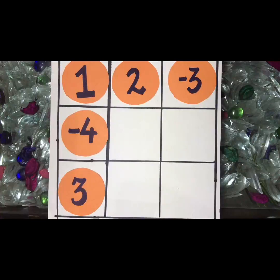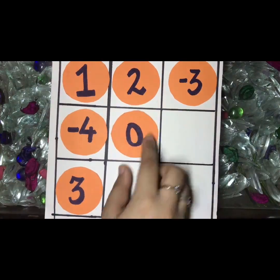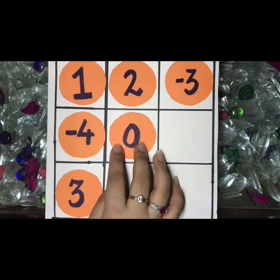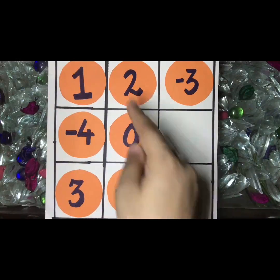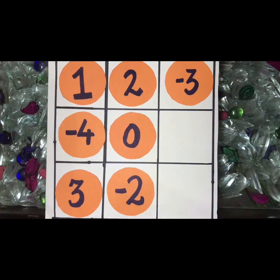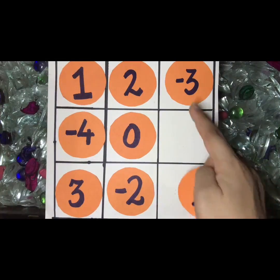Now similarly, we will arrange 0 in the center. So 2 plus 0, answer is 2. To get the answer here I need minus 2. So the answer of this row becomes 0.